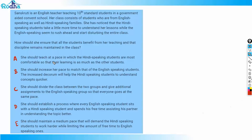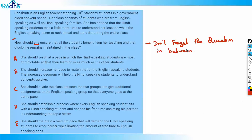Let's discuss this now. Option A says she should teach at a pace at which Hindi-speaking students are most comfortable so that their learning matches the other students. One thing I've observed in decision-making questions is that a lot of people tend to just read the passage and the options, then forget the question in between. Don't forget the question — you have to ultimately answer it. So the question is: how should she ensure that all students benefit and discipline is maintained?